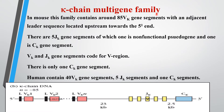For the kappa chain multi-gene family - kappa chains are another type of light chain. In the mouse family they contain around 85 V-kappa gene segments with adjacent leader sequences, located upstream towards the 5' end. There are around 5 J-kappa gene segments, of which one is a non-functional pseudo gene, and there is one C-kappa gene segment. The V-kappa and J-kappa gene segments encode for the variable region, while there is only one constant gene segment. In humans we have around 40 kappa gene segments, 5 J-kappa segments, and one C-kappa constant gene segment.